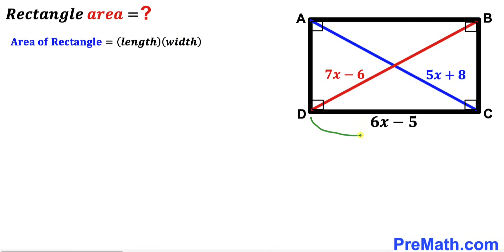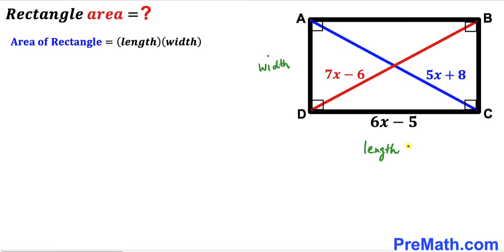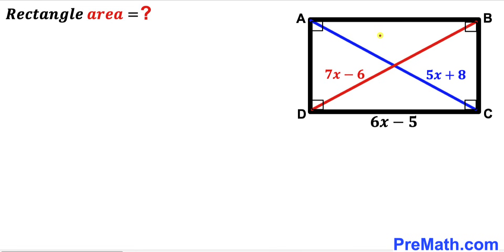In our case, one side of the rectangle is the length and the other side is the width. Our task is to calculate this length and width for this rectangle. Before we proceed any further, we are going to solve for x before we calculate the area.